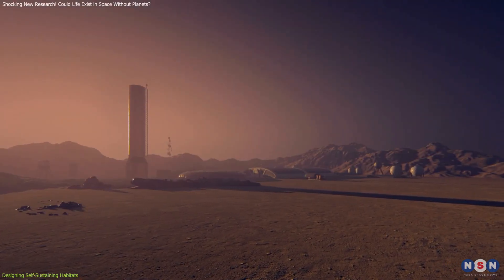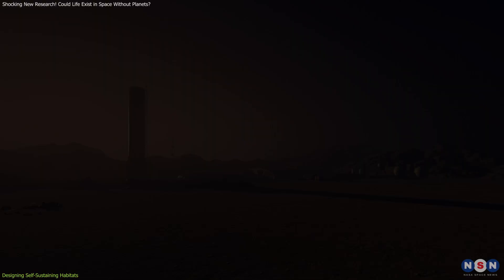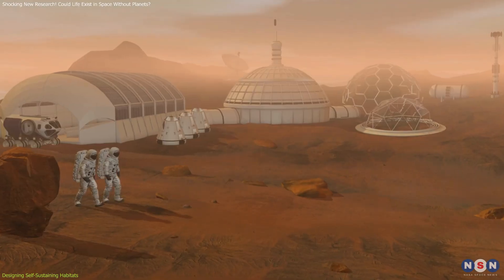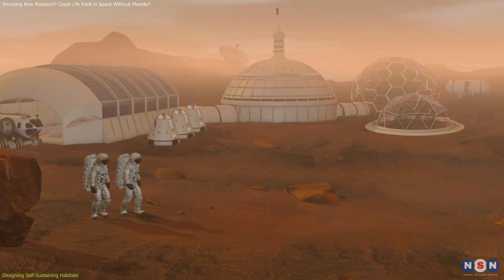These habitats would need to address three critical factors: maintaining liquid water, regulating temperature, and preventing volatile loss. Innovative solutions rooted in biological and physical principles could make such habitats feasible even in extreme environments.